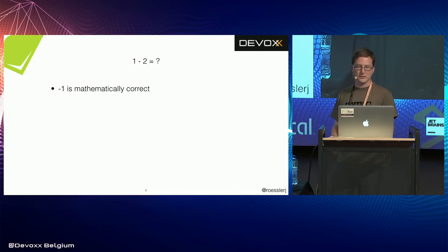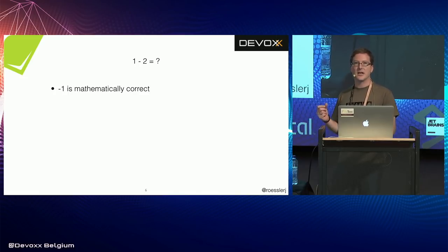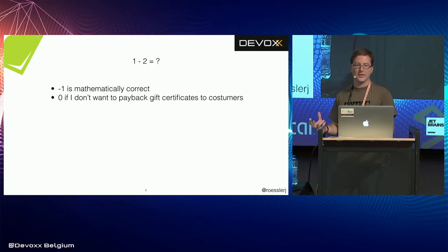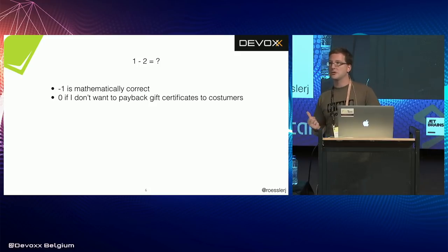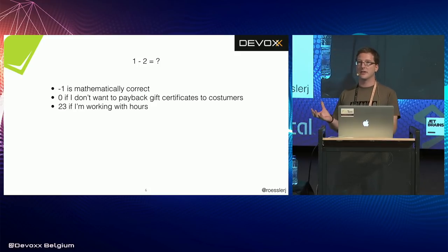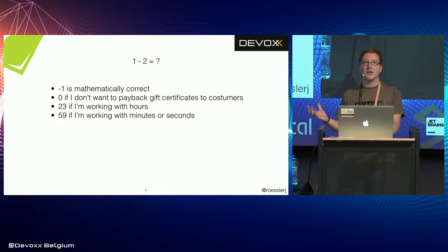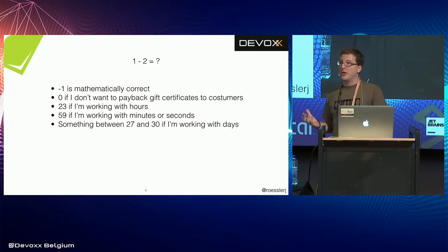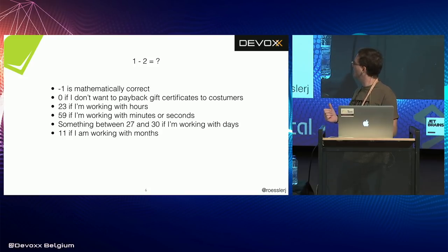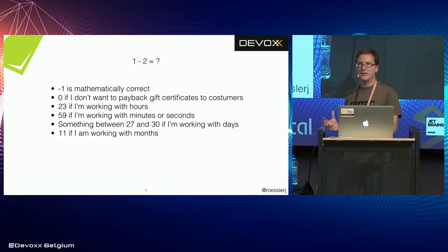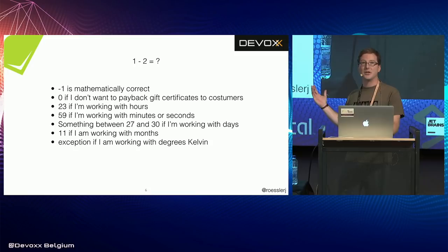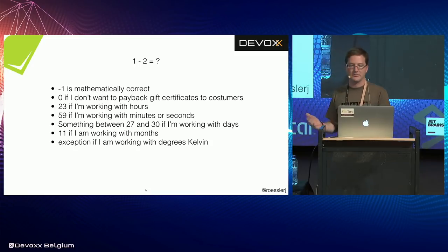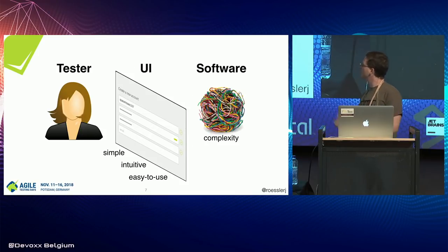If you're building Amazon and don't want to refund gift certificates, zero is the correct answer. If your software involves time, the result of one minus two could be 23 or 59 — depending on whether it's hours, minutes, or seconds. If it's a date application, it might be 27 or 30. And if you're working with Kelvin degrees, minus one would actually be an exception since negative Kelvin is invalid. The correct answer is entirely context-dependent.